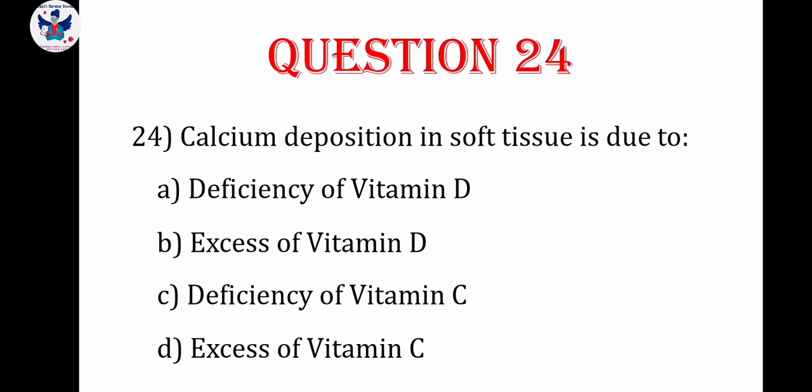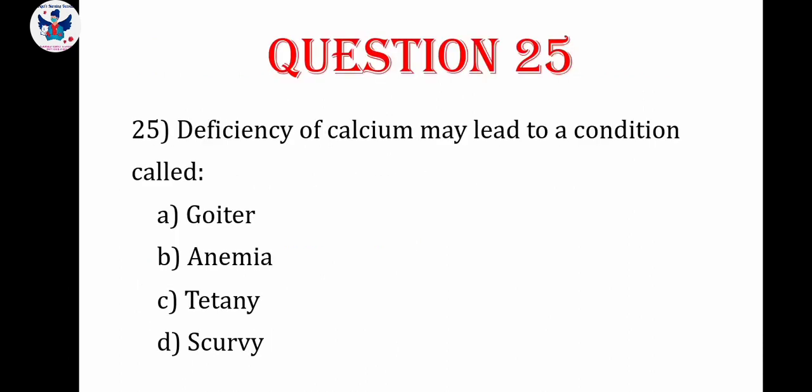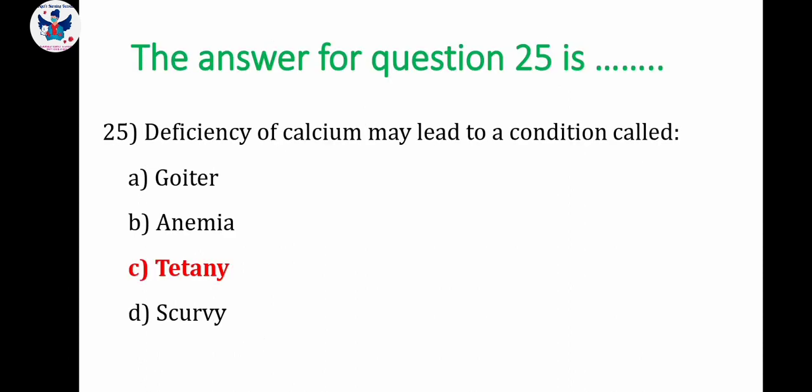Question number 24: calcium deposition in soft tissue is due to — deficiency of vitamin D, excess of vitamin D, deficiency of vitamin C, or excess of vitamin C. Vitamin D helps with calcium absorption, so if it exceeds, it will lead to calcium deposition. The correct answer is excess of vitamin D. Question number 25: deficiency of calcium may lead to — goiter, anemia, tetany, or scurvy. The correct answer is tetany.